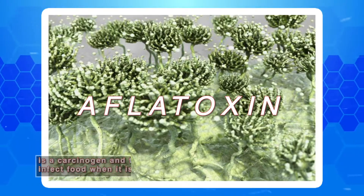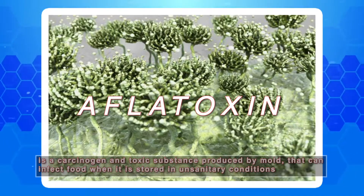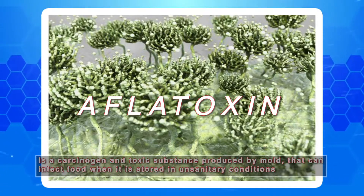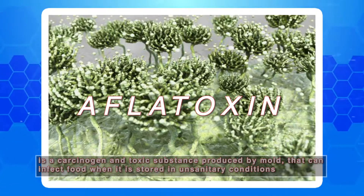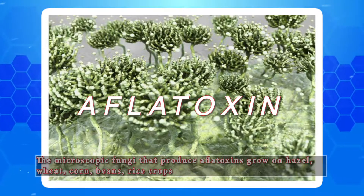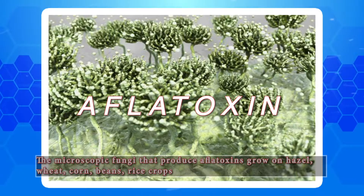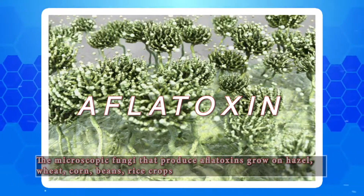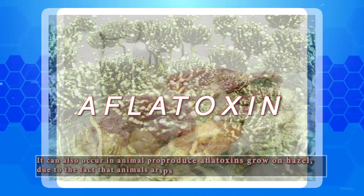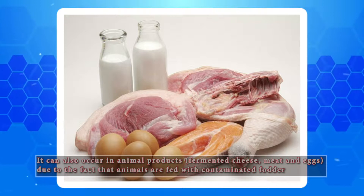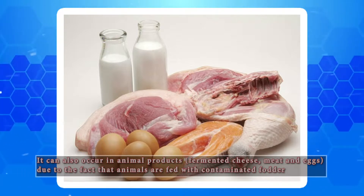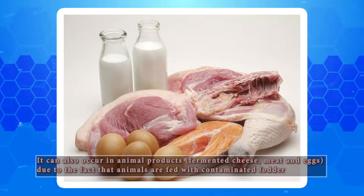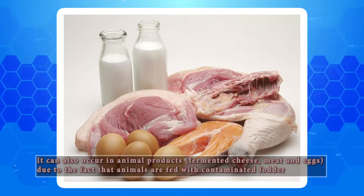Aflatoxin is a carcinogen and toxic substance produced by mold that can infect food when it is stored in unsanitary conditions. The microscopic fungi that produce aflatoxins grow on hazel, wheat, corn, beans, and rice crops. It can also occur in animal products such as fermented cheese, meat, and eggs due to the fact that animals are fed with contaminated food.